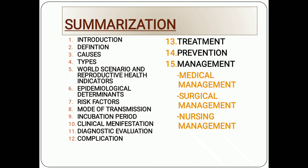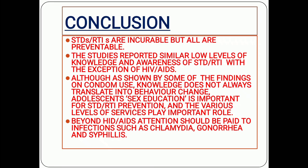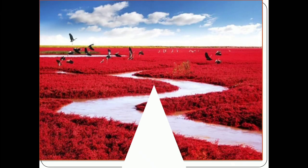In summary, we learned introduction, definition, causes, types, world scenario, reproductive health indicators, epidemiological determinants, risk factors, mode of transmission, incubation period, clinical manifestation, diagnostic evaluation, complications, treatment, prevention, and management — including medical, surgical, and nursing management. To conclude: STDs and RTIs are incurable but all are preventable. Studies report similar low levels of knowledge and awareness of STD/RTI, with the exception of HIV/AIDS. Knowledge does not always translate into behavior change. Adolescent sex education is important for STD/RTI prevention. Various levels of services play an important role. Attention should also be paid to infections such as chlamydia, gonorrhea, and syphilis alongside HIV/AIDS.